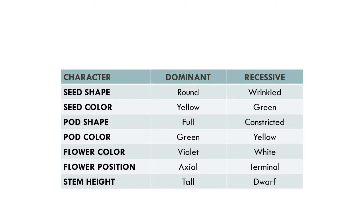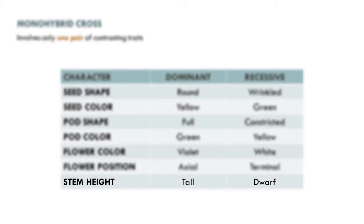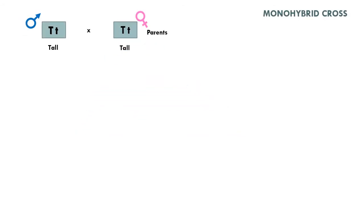A monohybrid cross involves only one pair of contrasting traits. In our first example, we will try to predict the genotypic and phenotypic ratios of the offsprings of a cross between two parents which are heterozygous for the tall trait. In this monohybrid cross, suppose that two parents which are both heterozygous for the tall trait were mated. Keep in mind that a heterozygous individual has a copy of both dominant and recessive alleles.